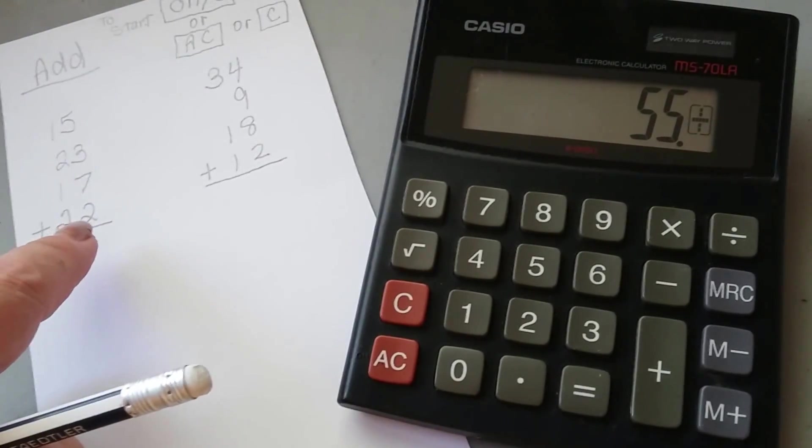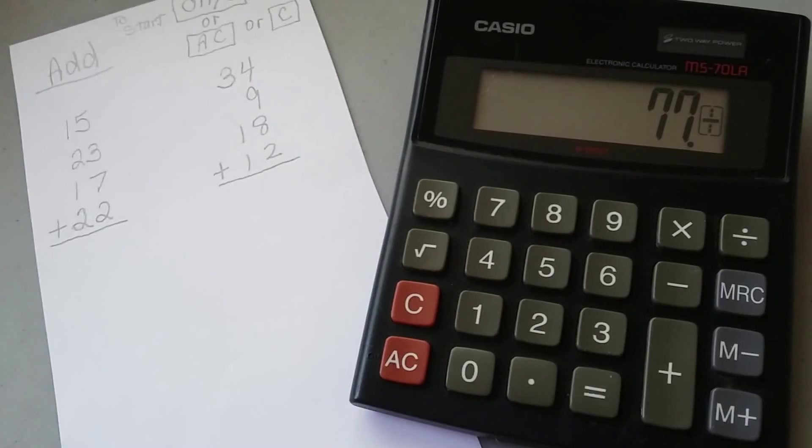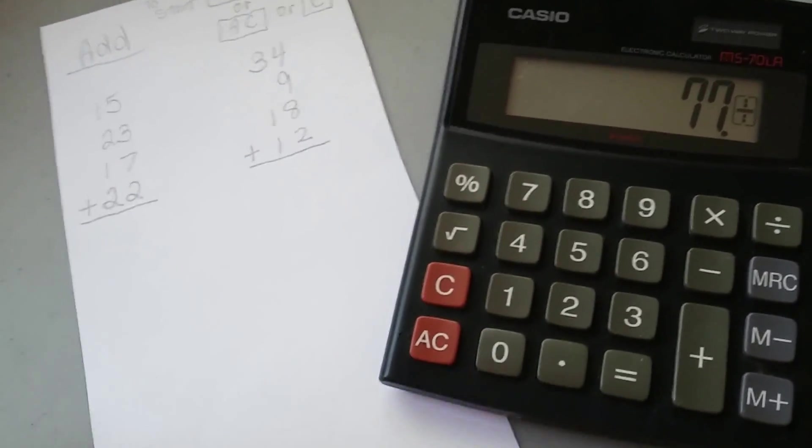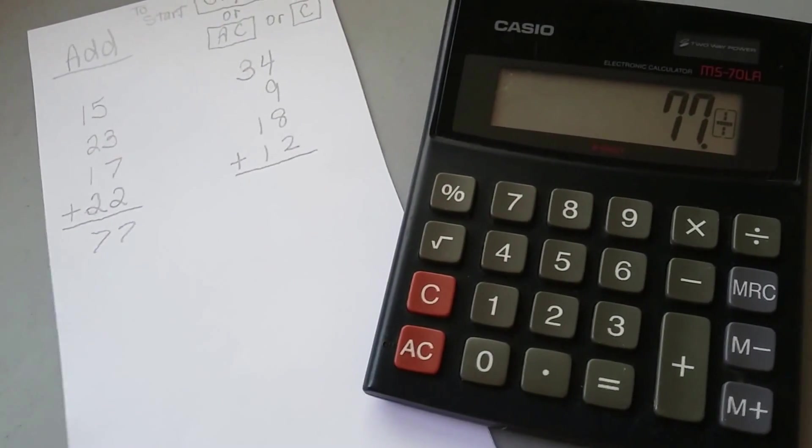And then the 22 is a 2 and a 2. 2, 2, plus. That gives us 77, just like we got on the board. 77.